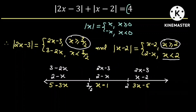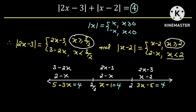We know that each sum is equal to 4. In the first case we have x equal to one third. In the second case we have x equal to 5. And in the third case we have x equal to 3.